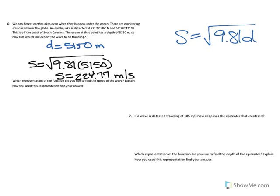So when we use this equation, we just use the general representation of the problem to solve. Now number seven says if a wave is detected traveling at 185 meters per second, how deep was the epicenter that created it?